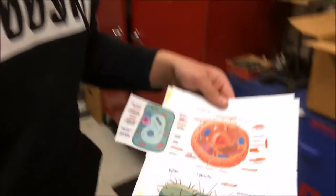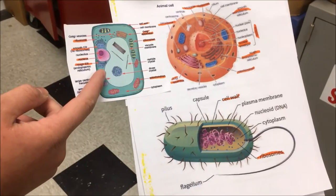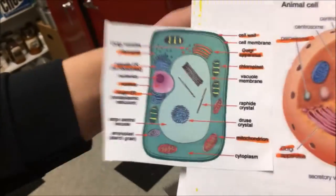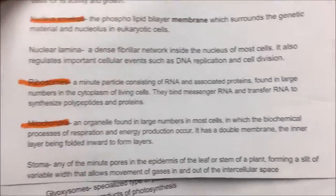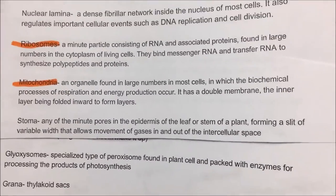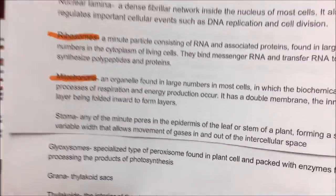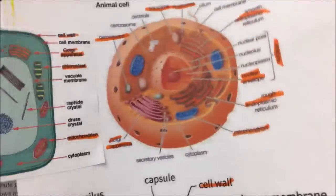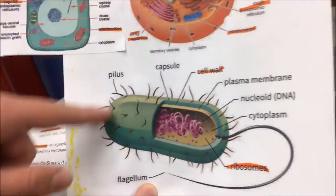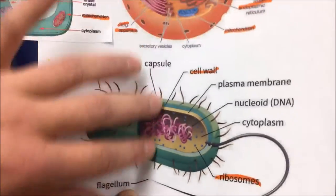Actually, Miss Frizzle, it's big Timmy. These are the structures — this would be considered a plant cell structure for the eukaryotic cell. As you can see, there's the ribosome. The ribosome, as you can see right here on this note sheet that Frizzle made for us, is a minute particle consisting of RNA and associated proteins found in large numbers in the cytoplasm of living cells. They bind messenger RNA and transfer RNA to synthesize polypeptides and proteins. The smooth or rough endoplasmic reticulum shows up in other cells, such as the animal cell, which is also eukaryotic. This one down here is a prokaryotic cell, so it has ribosomes, but these cells don't share as much as the eukaryotes.